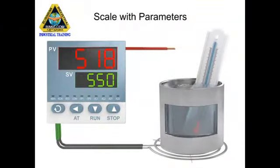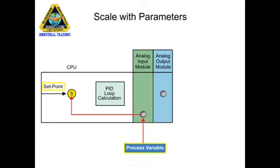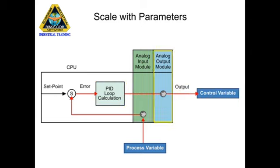PID control is a common closed loop system used to maintain physical properties such as pressure and temperature in automated processes. The PID instruction controls the closed loop by comparing the input or process variable from an analog input module to the system setpoint. The difference between the setpoint and the process variable is referred to as error. The error is analyzed by the PID loop calculation and provides an output or control variable to an analog output module to meet the setpoint defined by the system requirements.